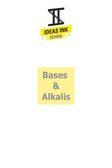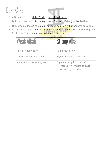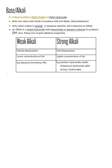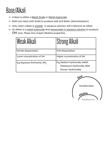Now onto the next part of this chapter. In this section, we will be discussing bases and alkalis. The differences between a base and an alkali are confusing, so please pay extra attention. A base is a compound that is either a metal oxide or a metal hydroxide. This base can react with acids in a neutralization reaction to produce a neutral mixture of salt and water. However, not all bases can call themselves alkalis. Only when a base is soluble in aqueous solution will it become an alkali. In essence, an alkali is a subset of the larger family of bases.